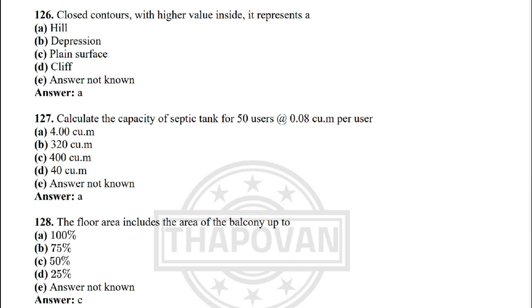Next: closed contours with higher values inside represent — option A: hill. Next: calculate the capacity of a septic tank for 50 users at 0.08 m³ per user — the correct answer is option A: 4.00 m³.